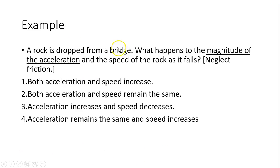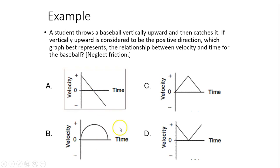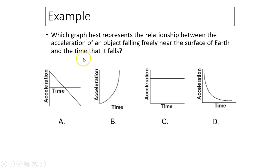Next: a rock is dropped from a bridge — what happens to the acceleration? This is free fall. Acceleration is constant, so acceleration remains the same and speed increases. Next: a student throws a baseball vertically upward then catches it. If vertically upward is considered positive, which graph represents the relationship between velocity and time? You have a big velocity, it decreases, becomes zero, then turns around and increases in the negative direction. Which graph best represents acceleration versus time? Around Earth's surface, acceleration is constant — this is the constant acceleration graph.